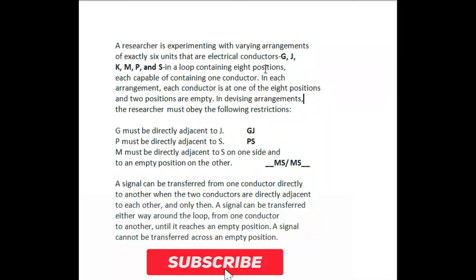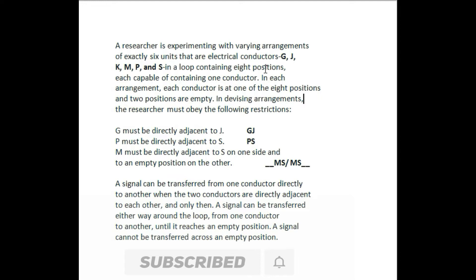Our researcher is experimenting with varying arrangements. The same arrangement is an experiment of exactly 6 units — 6 units that are electrical conductors. These 6 electrical conductors are in the same arrangement. There is one loop containing 8 positions, and each loop is capable of containing 1 conductor. In each arrangement, each conductor is at 1 of the 8 positions, and 2 positions are empty.